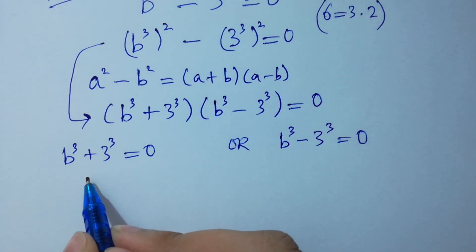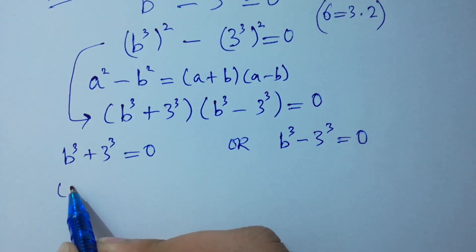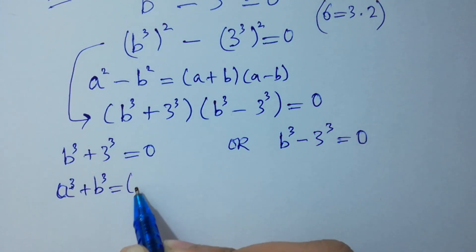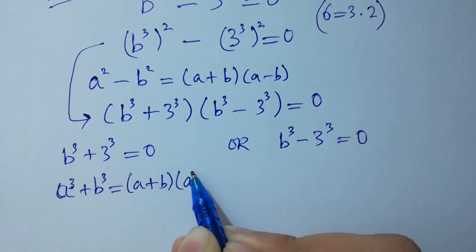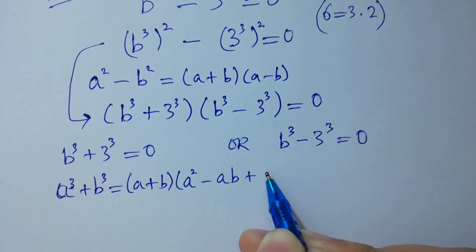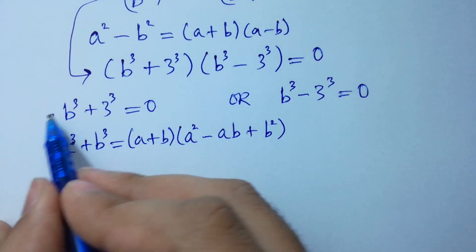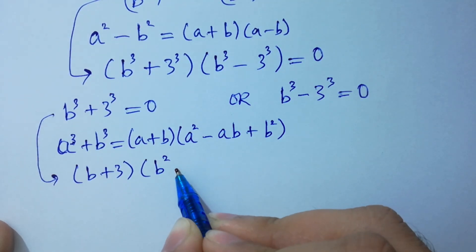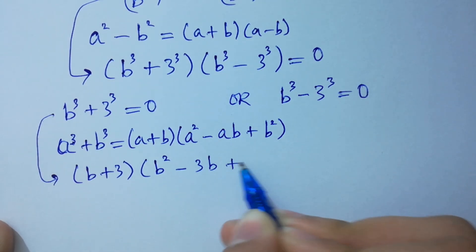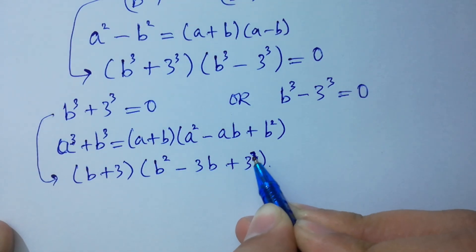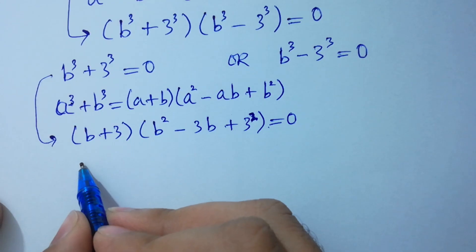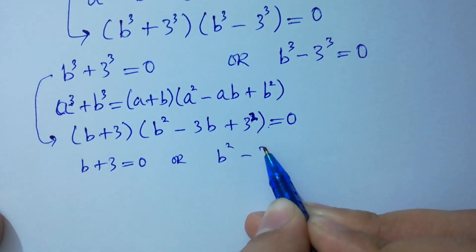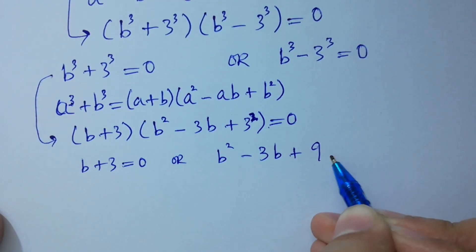For B cubed plus 3 cubed, we apply the formula A cubed plus B cubed equals A plus B times A squared minus AB plus B squared. Applying this gives us: B plus 3 equals 0 or B squared minus 3B plus 9 equals 0.